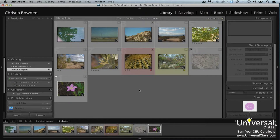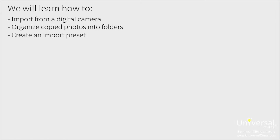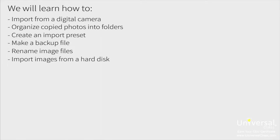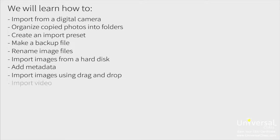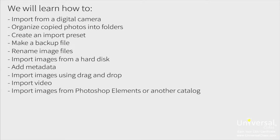If you have a device that stores images and you have a way to transfer those images to your computer, chances are you can import directly into Lightroom. Although we've already walked you through the basic steps to importing images in a previous lesson, we're going to devote this entire lesson to importing images as well. We'll learn how to import from a digital camera, organize copied photos into folders, create an import preset, make a backup file, rename image files, import images from a hard disk, add metadata, import images using drag and drop, import video, import images from Photoshop Elements or another catalog, and use tethered shooting.